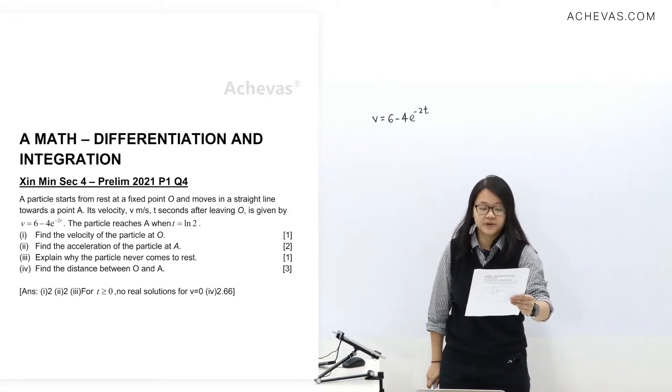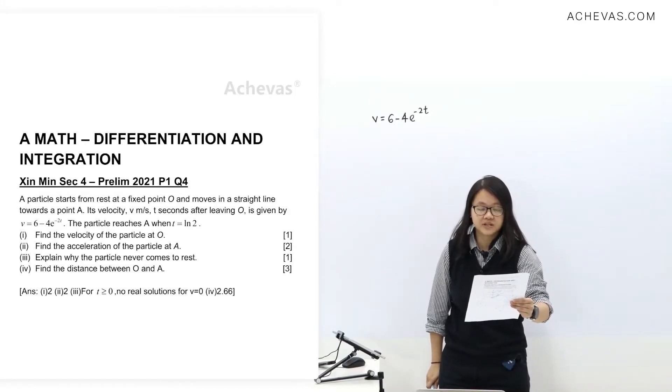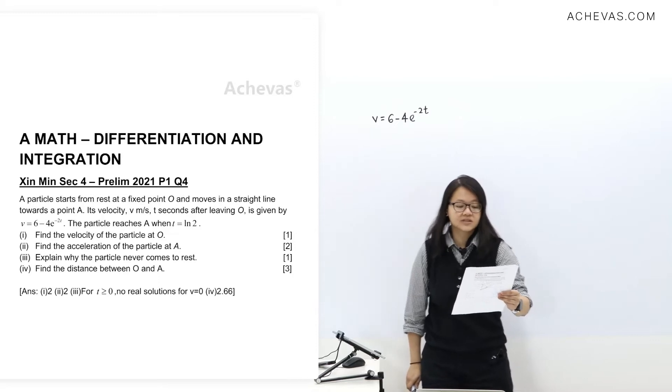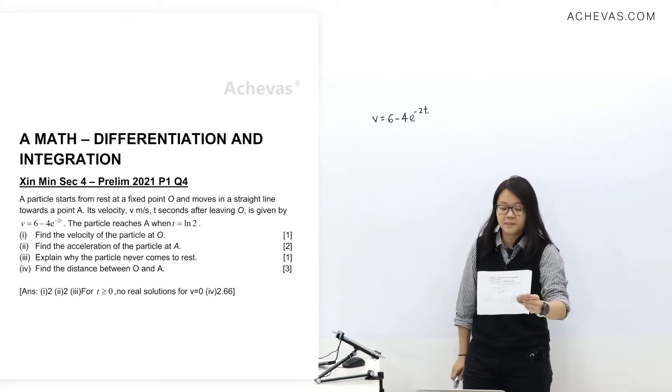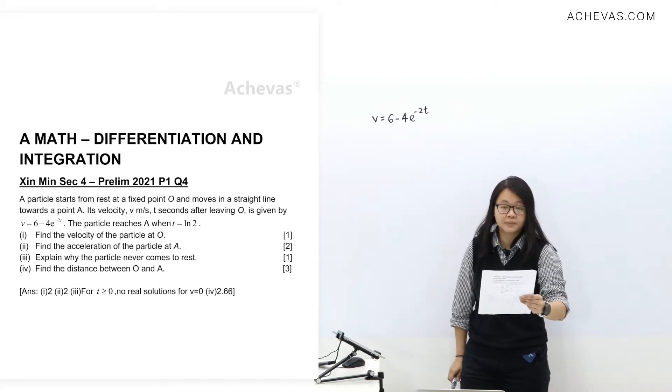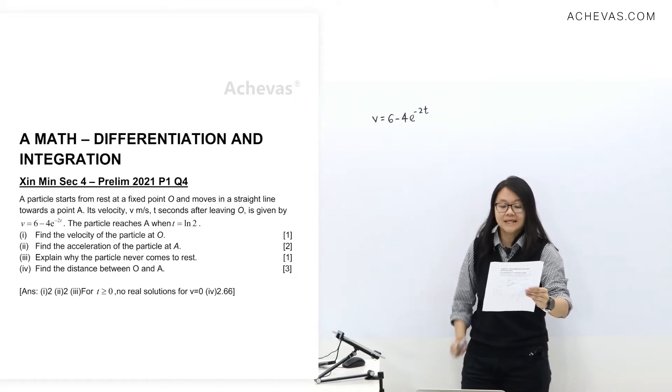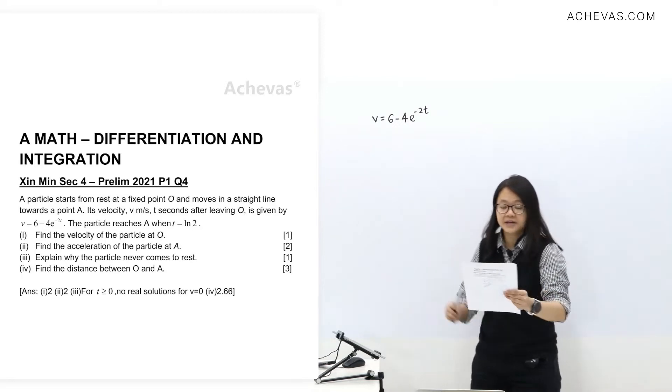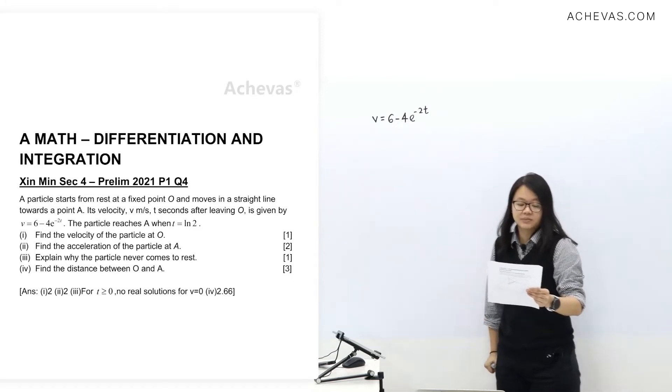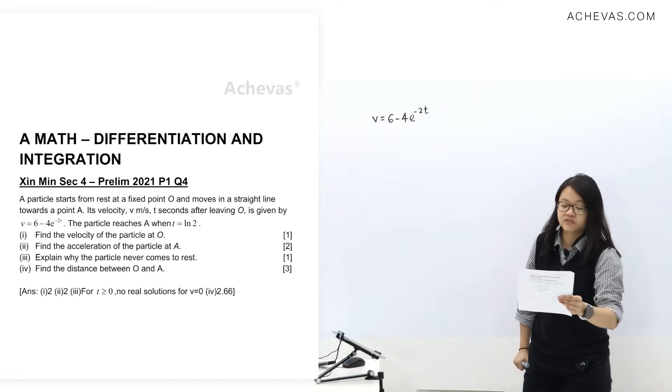Now let's take a look at Sin Min, Sec 4, Prelim 2021, Paper 1, Question 4. A particle starts from rest at a fixed point O and moves in a straight line towards a point A. Its velocity V meter per second, T seconds after leaving O, is given by V equals 6 minus 4E to the power of negative 2T.